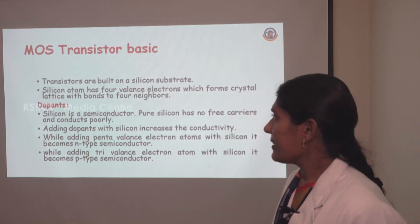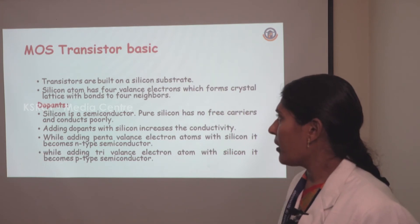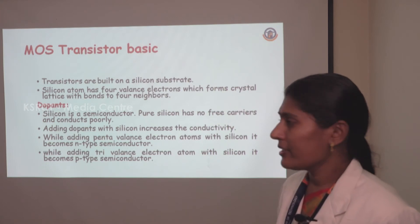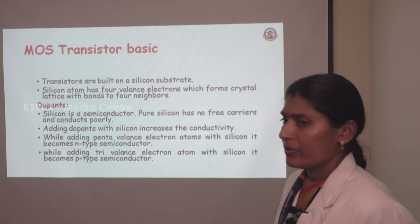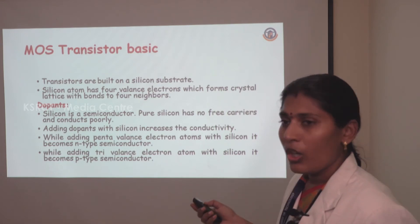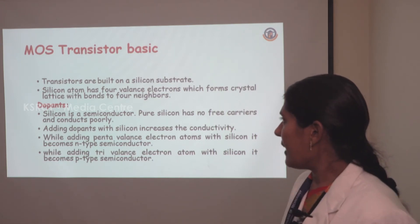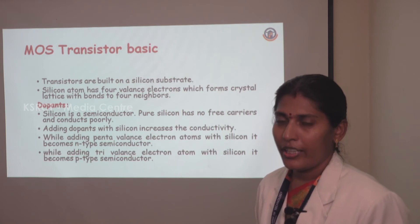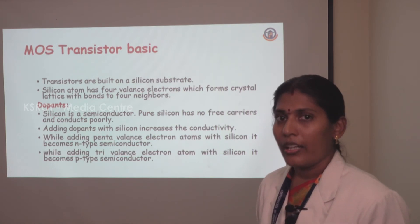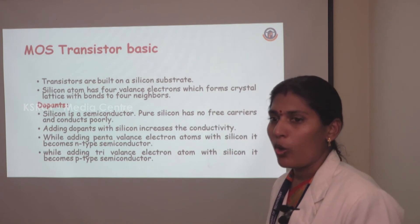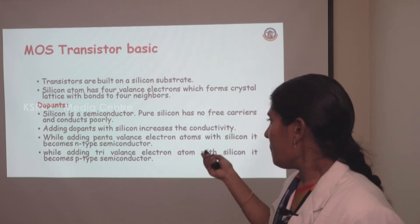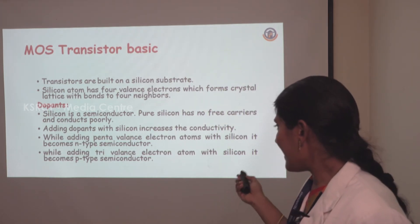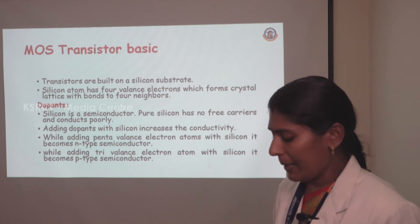Next topic is MOS transistor basics. MOS stands for Metal Oxide Semiconductor. Transistors are built on a silicon substrate. Silicon has four valence electrons, forming bonds with four neighbors. In pure form, silicon acts as an insulator. To increase conductivity, we add doping material. If we add pentavalent (five valence) elements, it becomes an N-type semiconductor. If we add trivalent (three valence) elements, it becomes a P-type semiconductor.